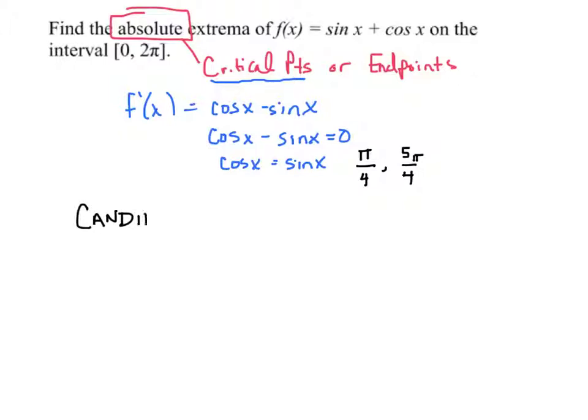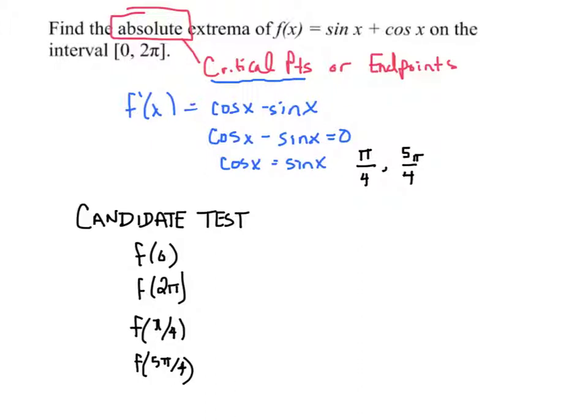Now we do what's called the candidate test. The candidate test has us actually go back to the original function, plug in the endpoints and the critical points to just see which one is largest and which one is smallest. Let's do that.